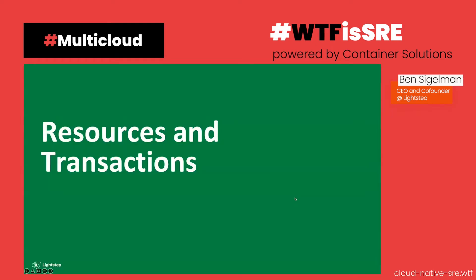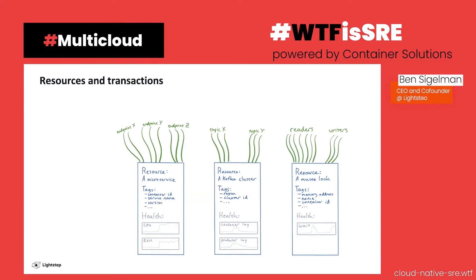The first thing I want to do is set the stage with some important concepts — the fundamental building blocks for thinking about observability: resources and transactions. In this diagram you can see some blue boxes representing different types of resources. Resources can vary in size and scope — a microservice, a Kafka cluster, or an individual mutex lock. Resources can be described by tags that help identify them and let you slice and dice as you're analyzing them.